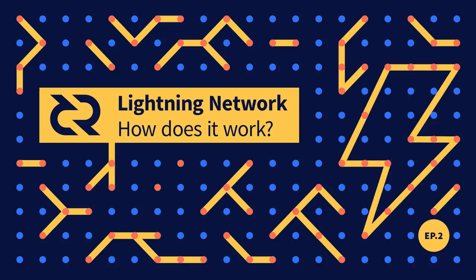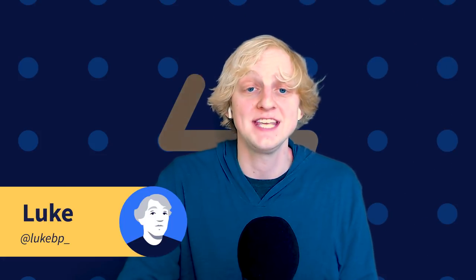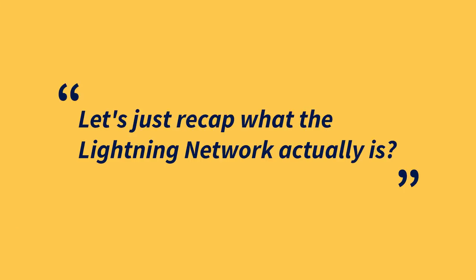Welcome to episode two of the Lightning Network mini series. In episode one, we covered topics like on-chain scaling and why we need the Lightning Network. In this episode, we're going to be diving into what the Lightning Network is, how it works, payment channels, routed payment channels, onion routing, centralization risk and limitations. We've got a lot of great content, but before we get started, let's first establish some background information.